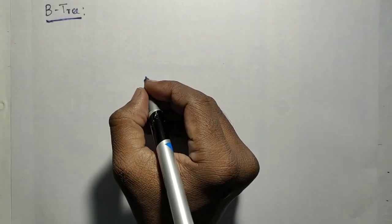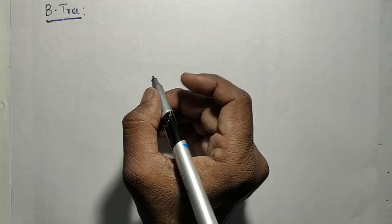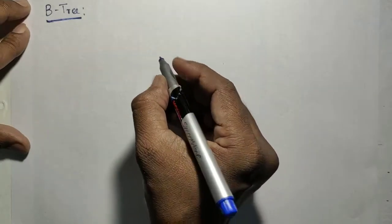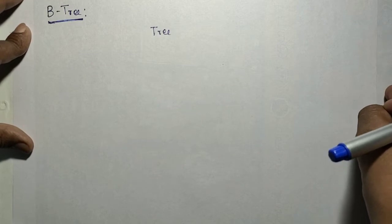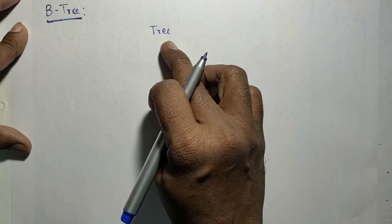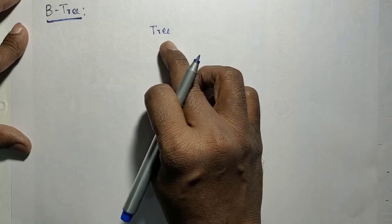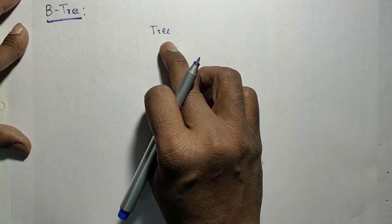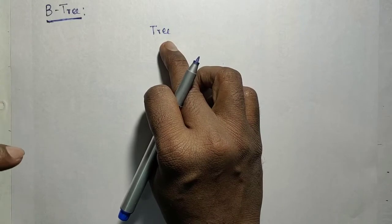Welcome to this session where we are going to discuss the B-tree concept. A tree data structure is used for storing a collection of elements, but unlike a simple list, there is a relationship between the data — a child-parent relationship. The starting node is called the root, and the root can have many children, and those children can have their own children.